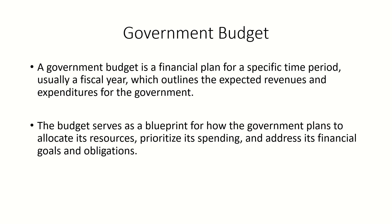A fiscal year and a calendar year are both ways of organizing time for accounting and budgeting purposes, but they differ in their starting and ending dates. A fiscal year is a 12-month period used by a government or business for budgeting and financial reporting purposes. It can start on any date and is often different from the calendar year.